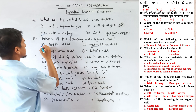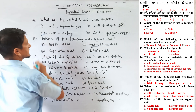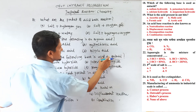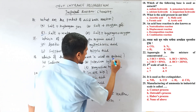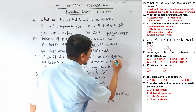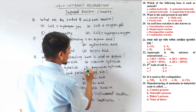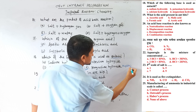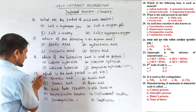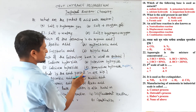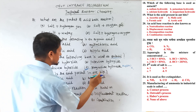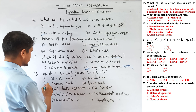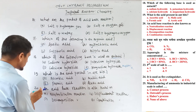Question number 18: Which of the following base is used as an antacid? In the body, magnesium hydroxide Mg(OH)2 is used as an antacid. Question number 19: What is the acid present in an ant bite? When an ant bites, formic acid is released on the skin.